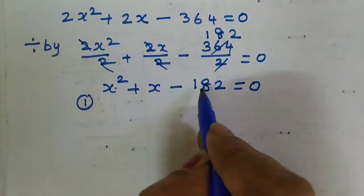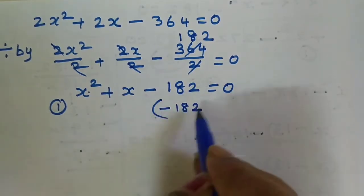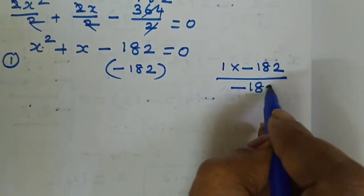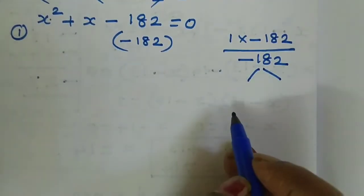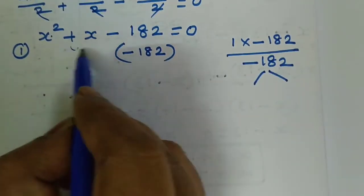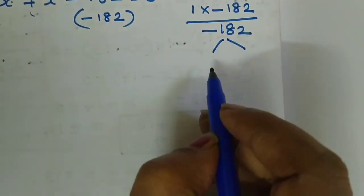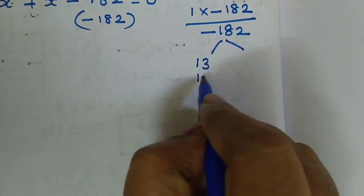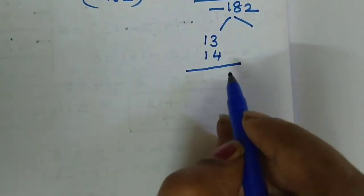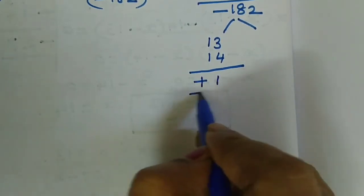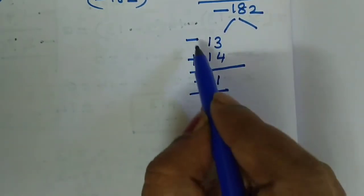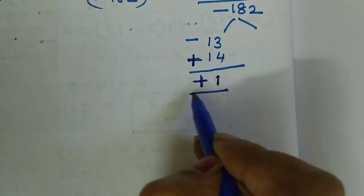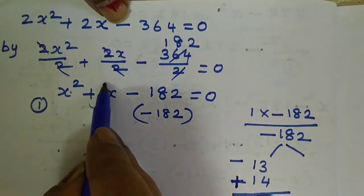The coefficient of x squared is 1 and the constant term is minus 182. Multiply these two values: 1 into minus 182 equals minus 182. Now find suitable factors — 13 into 14 equals 182. The sum of the factors should equal the coefficient of x, which is plus 1. So put a plus sign on 14 and a minus sign on 13; subtracting 13 from 14 gives 1, which equals the coefficient of x.